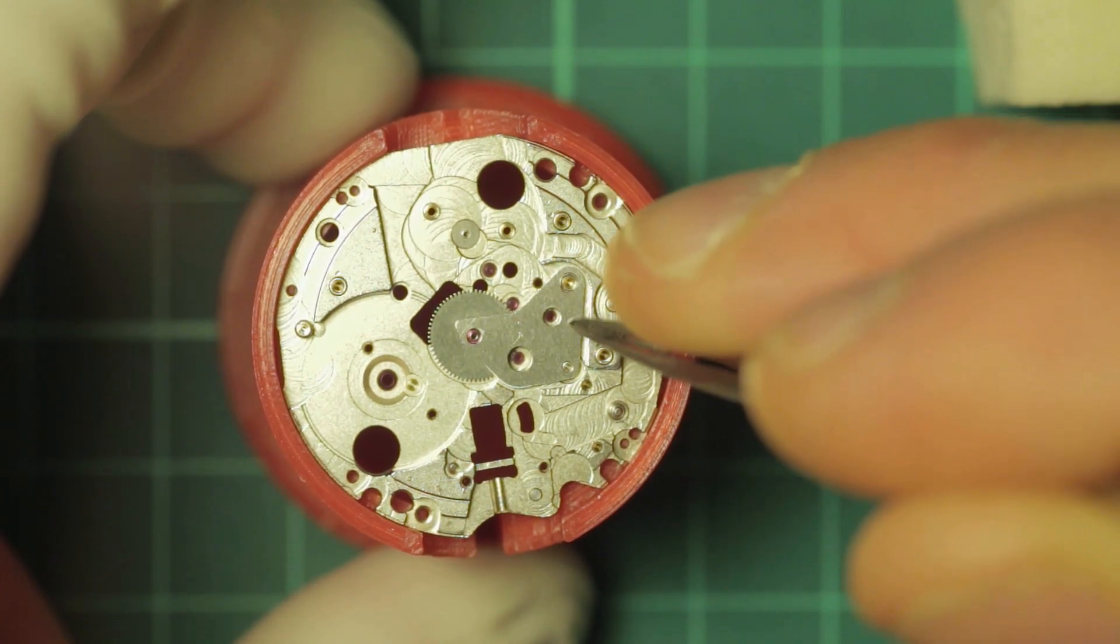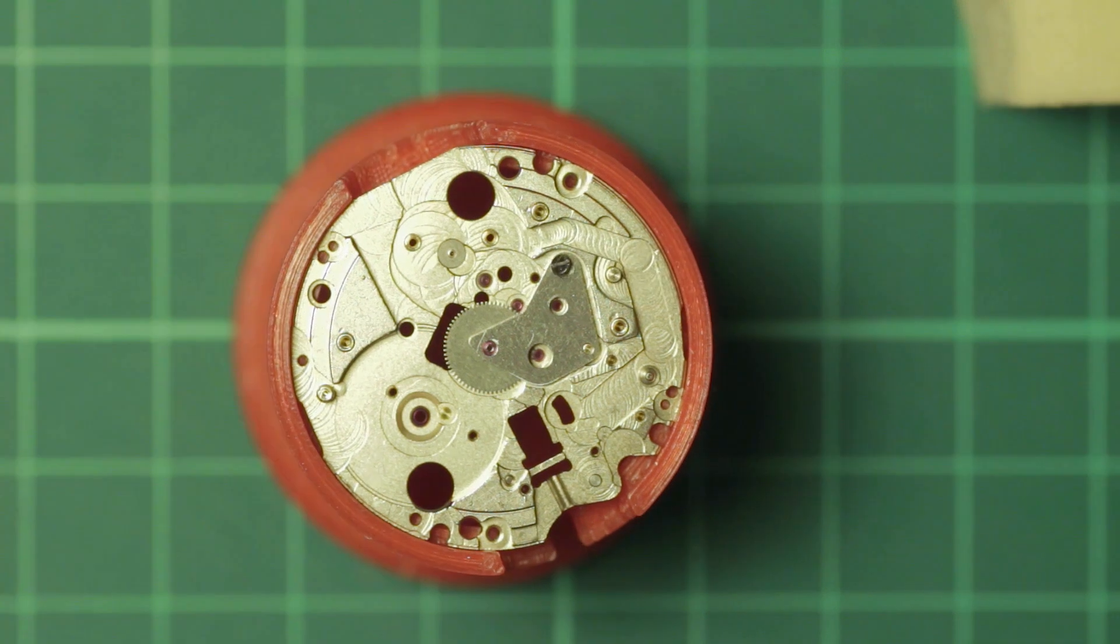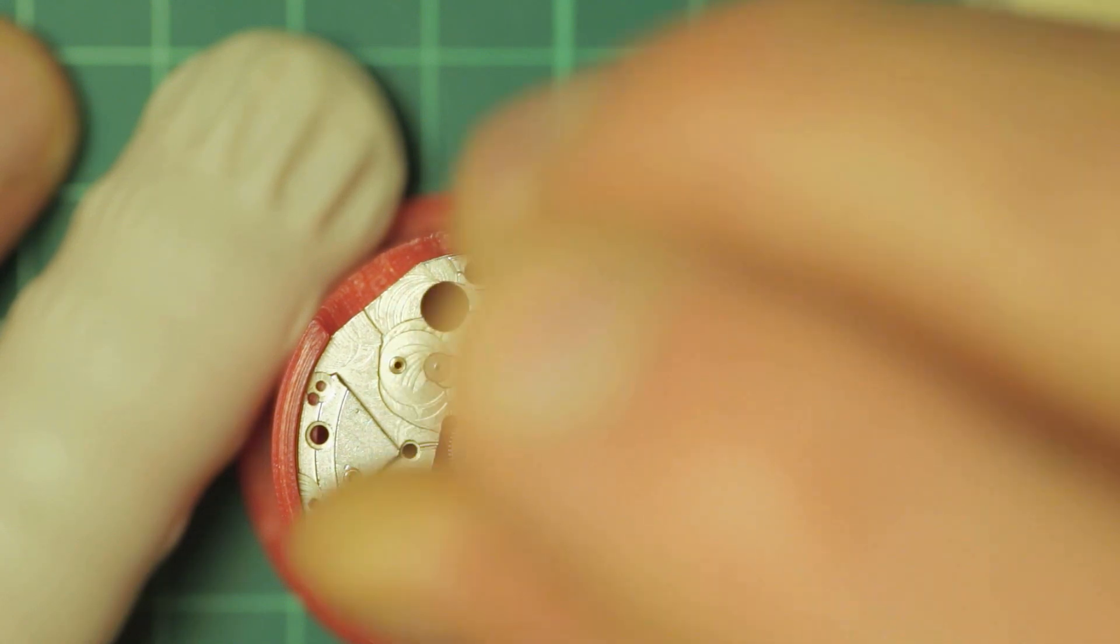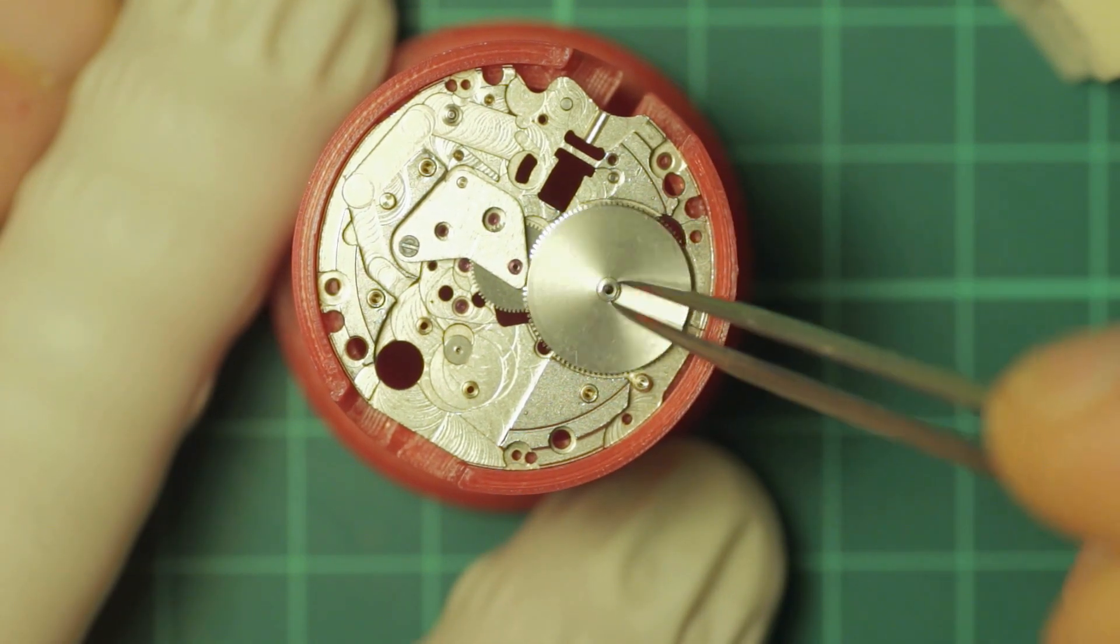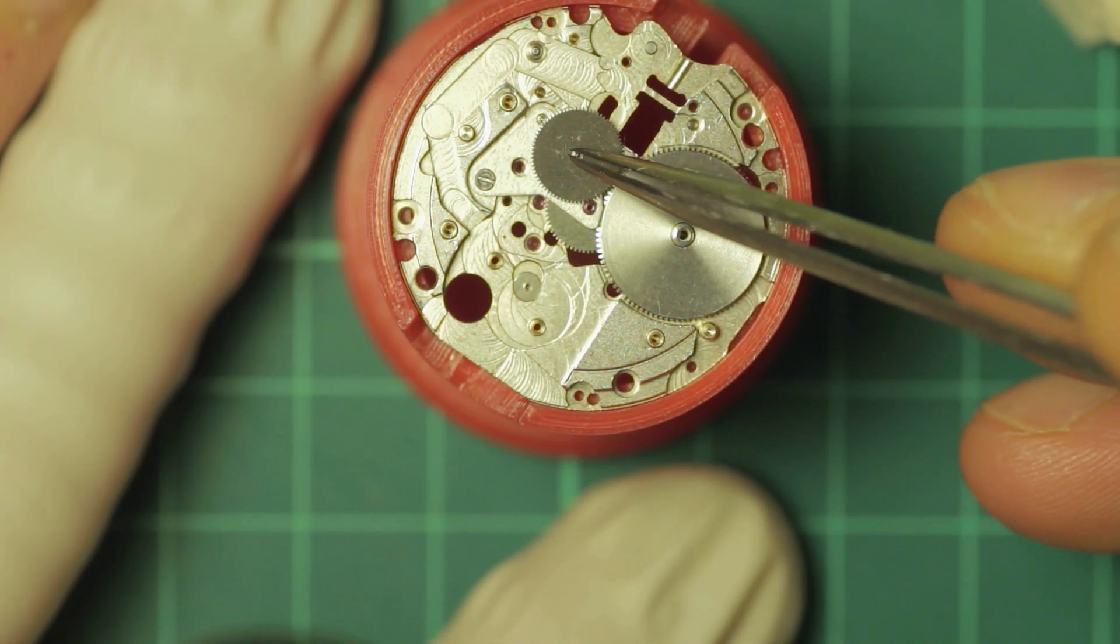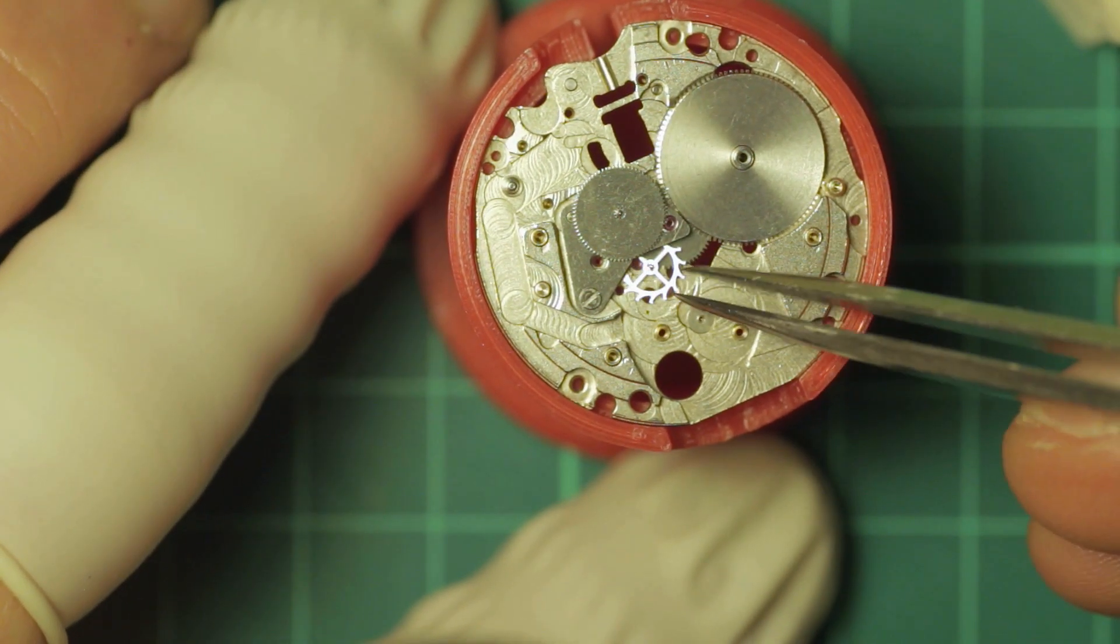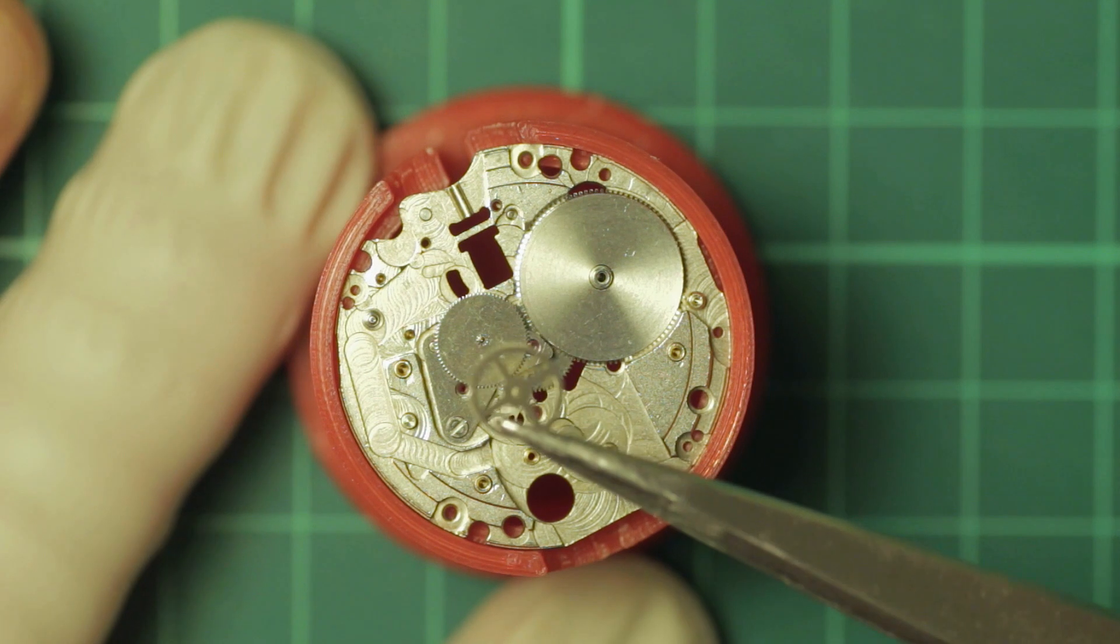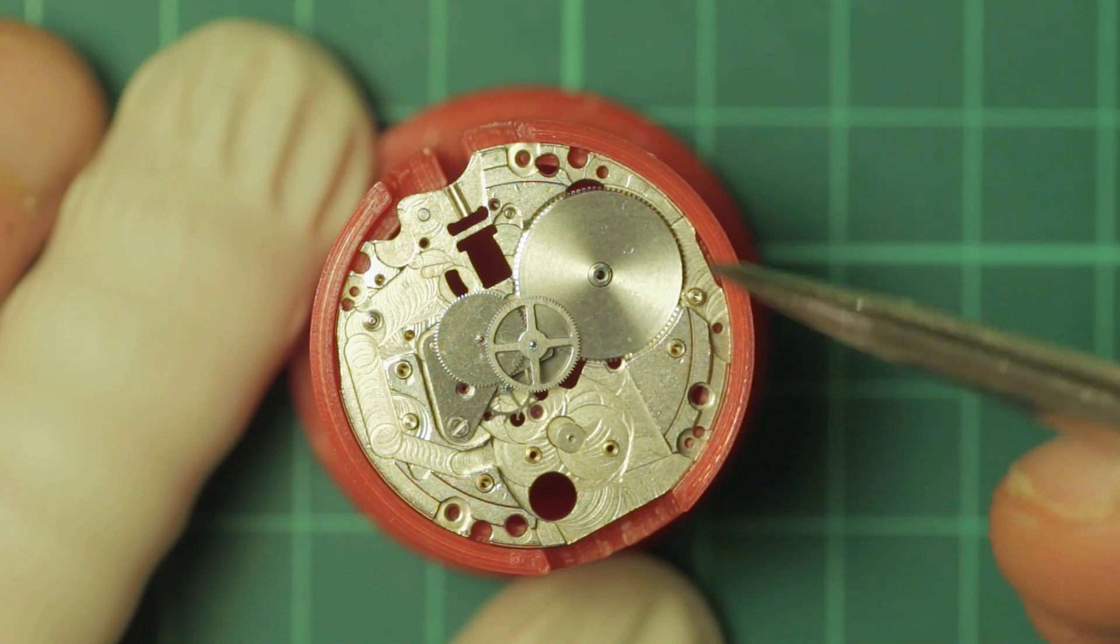Once the center wheel is fitted, the center wheel bridge is fitted in place and screwed into place. Following this, the barrel, third wheel, escape wheel, and then the fourth wheel after lubricating the pivot for the stem.